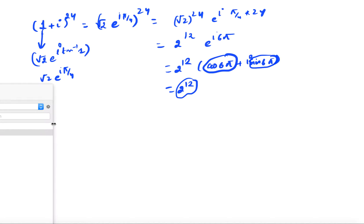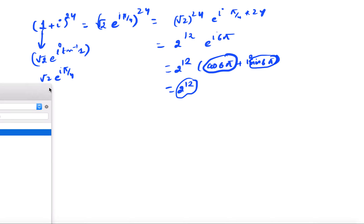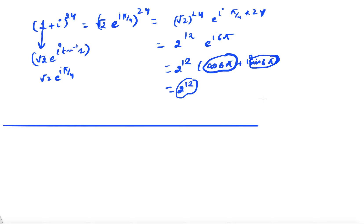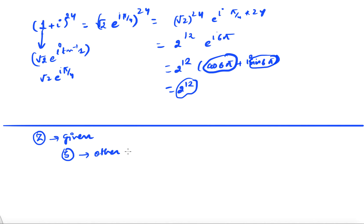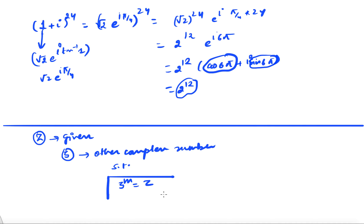Now let us see how we can compute the mth roots of a complex number. Basically, given a complex number z, we are looking for some complex number ζ such that ζ^m = z. We want to know how to compute such ζ.